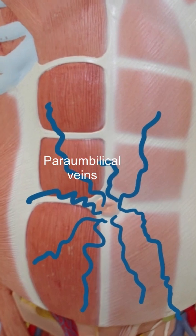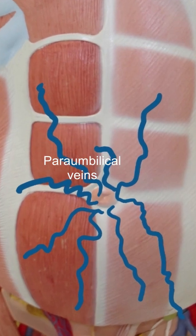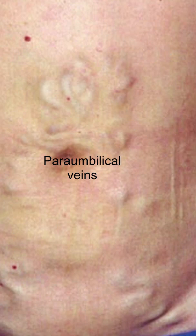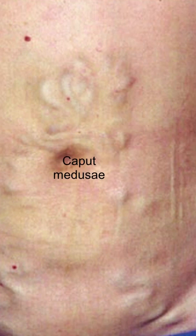Thus, the para-umbilical veins radiating away from the umbilicus would become dilated and tortuous in portal hypertension and can be seen under the skin, forming the clinical sign of caput medusae, or the Medusa head, where caput is the Latin word for head.